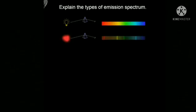In this question, we have to explain the types of emission spectrum. There are basically three types of emission spectrum. The first type is called the continuous spectrum.